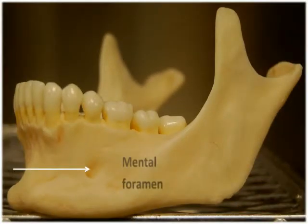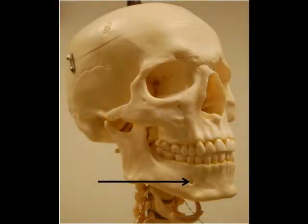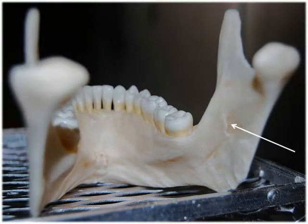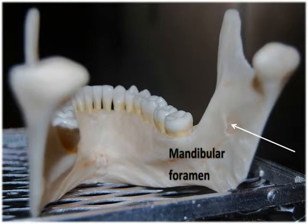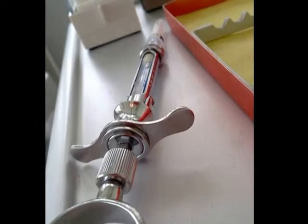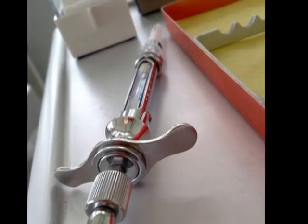The mental foramen is located on the chin in an area just under the second premolar tooth, and it allows passage of the mental nerve and associated blood vessels. On the medial surface of each ramus, you'll find the mandibular foramen, which allows passage of the inferior alveolar nerve and its associated blood vessels. Both of these foramina are also sites used by dentists when injecting anesthetics.